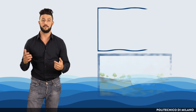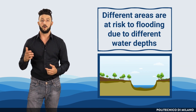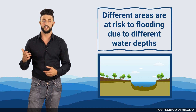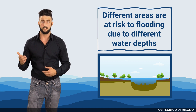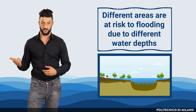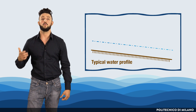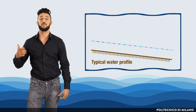By doing so, we can determine low-lying areas at risk of flooding due to the differential water depths within the channel, and try to mitigate this risk through various forms of river training. You can see in the picture an example of a typical water profile along a steep and mild slope.